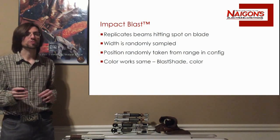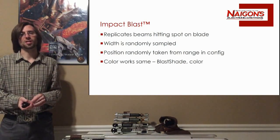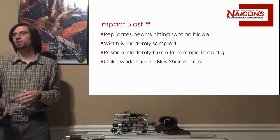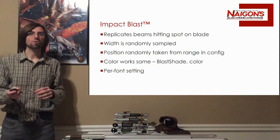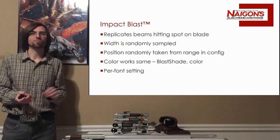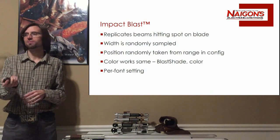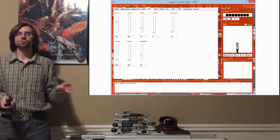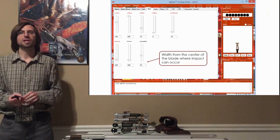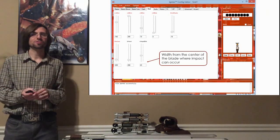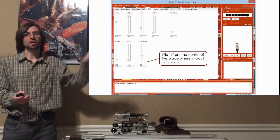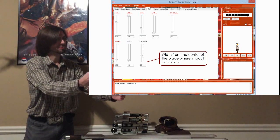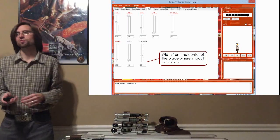Additionally, it randomly picks where that spot is, and you can configure the range from the middle of the blade and how wide. The color is based on what you set, and you can also set the blast shade — it will randomly vary the color and shade using that random spot. This is a per-font setting, so if you want the legacy blast for the string blade you can do that for any number of fonts. Here's the I2-RT config editor showing how to set the width with a new slider at the bottom — you set how many LEDs from the middle you want the blast to be able to reach up and down.